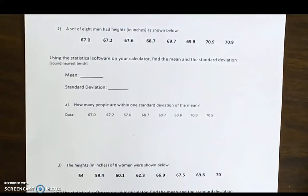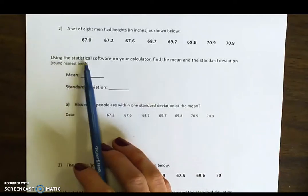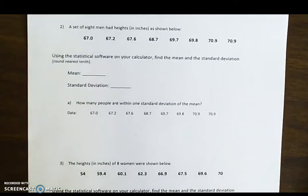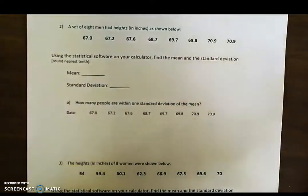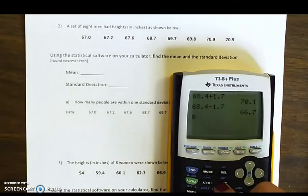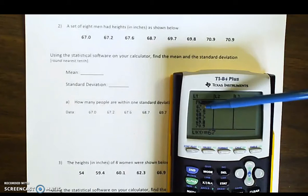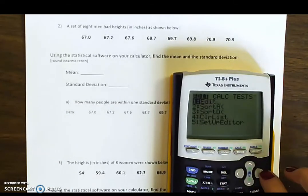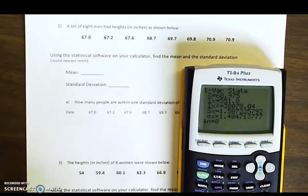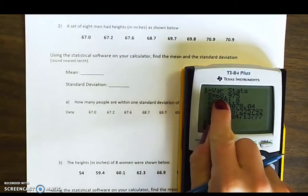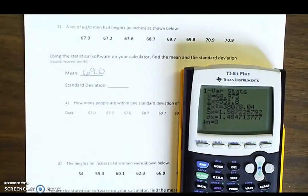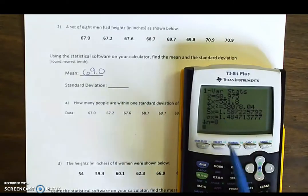Let's take a look at our second data set. Here we have a set of eight men and their heights measured in inches. Using your statistical software on your calculator, find the mean and standard deviation and round to the nearest tenth. We go to stats, edit, put all the numbers into the list, then go to stats, calculate, one variable stats. Our mean value — rounding to the nearest tenth — is 69.0, and the standard deviation is 1.6.